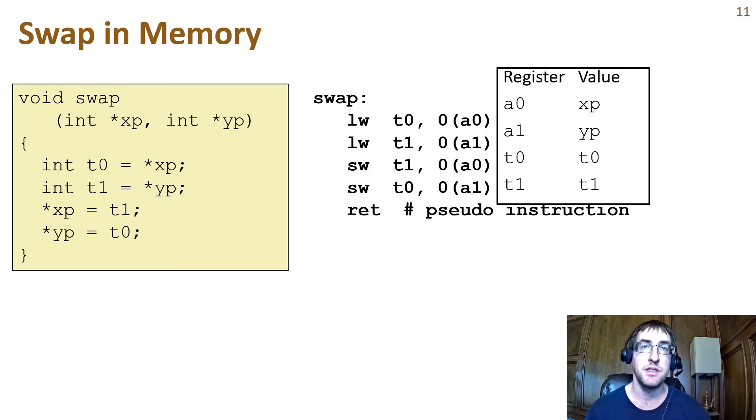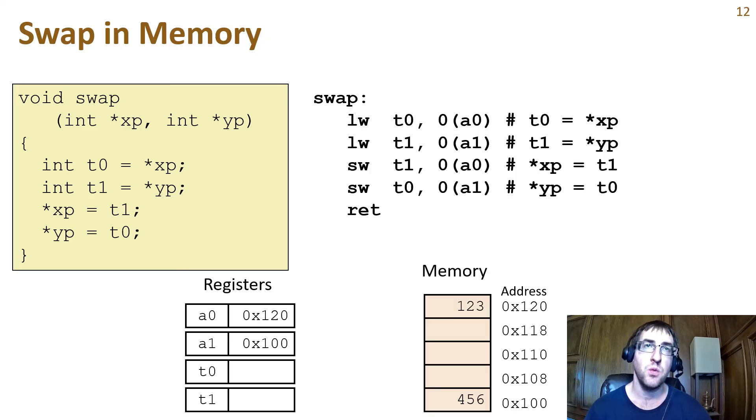Let's walk through an example with some made up numbers. Suppose that swap was called with address pointers xp equals 0x120 and yp is hexadecimal 100. The first line of code moves the value at address 120 into the T0 register. Here I'm ignoring endianness and a bunch of leading zeros. The next line of code moves the value at address 100 into the T1 register. The third line of code moves the value from T1 to the address 120. And the last line of code moves the value from T0 to the address at hexadecimal 100.